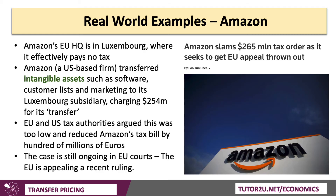Amazon — a big case. Their European Union HQ is based in Luxembourg, where effectively it pays no tax. Amazon US transferred intangible assets such as software, customer lists, and marketing to its Luxembourg subsidiary, charging for the transfer. The European Union and US tax authorities argue that this was too low and reduced Amazon's tax bill by hundreds of millions of euros. This case is still ongoing — Amazon won a legal case against the extra tax bill, but the European Union is now appealing to get that decision thrown out.